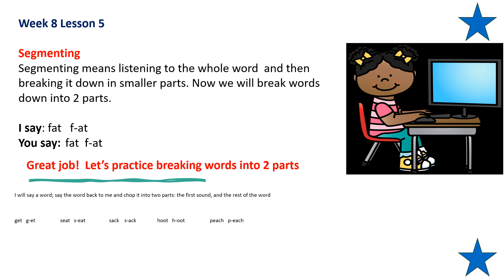Excellent. Now let's practice. Repeat after me: get — g, at. Good job. Repeat after me: seat — s, eat. Good job. Repeat after me: sack — s. Repeat after me: hoot — h, oot. Good job. Repeat after me: peach. Now you try and break it into two parts: p, each.